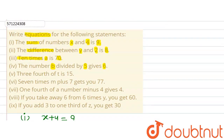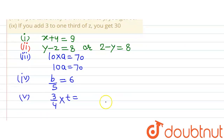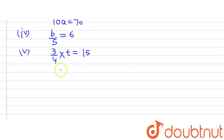The fifth part says that 3 fourths of t is 15. Three fourths means 3 divided by 4, so this will be written as (3/4) multiplied by t equals 15. On simplifying further, we get 3t divided by 4 equals 15, that is 3t/4 = 15.